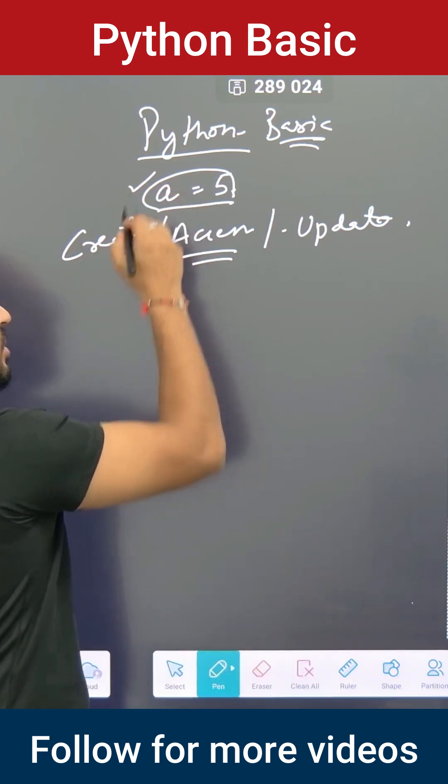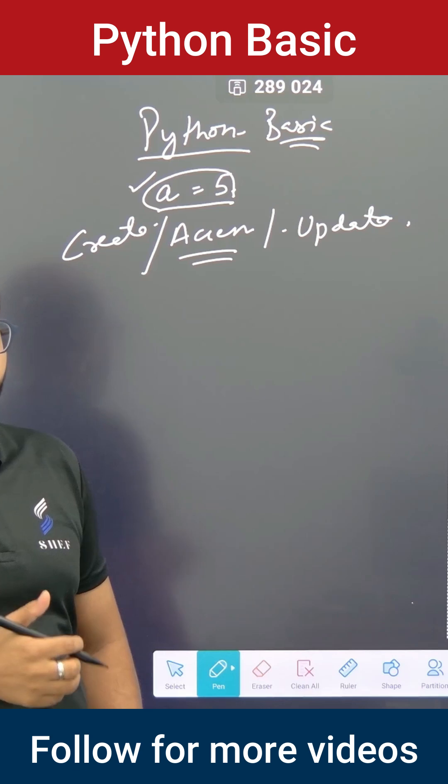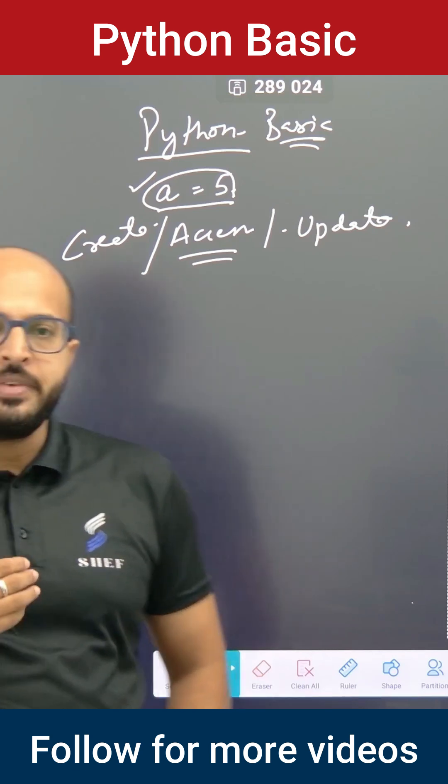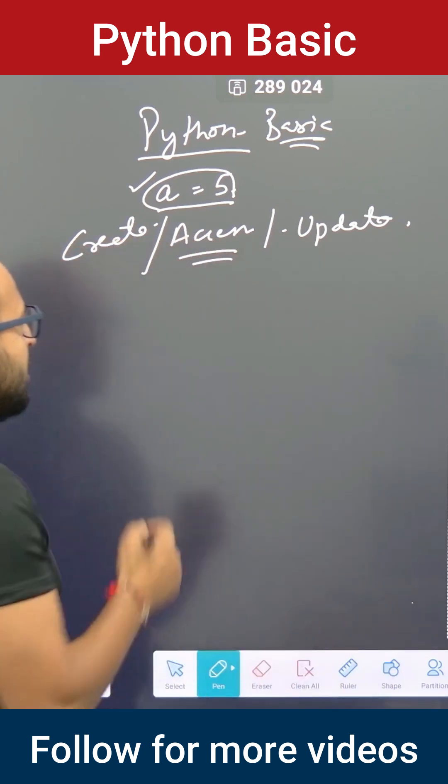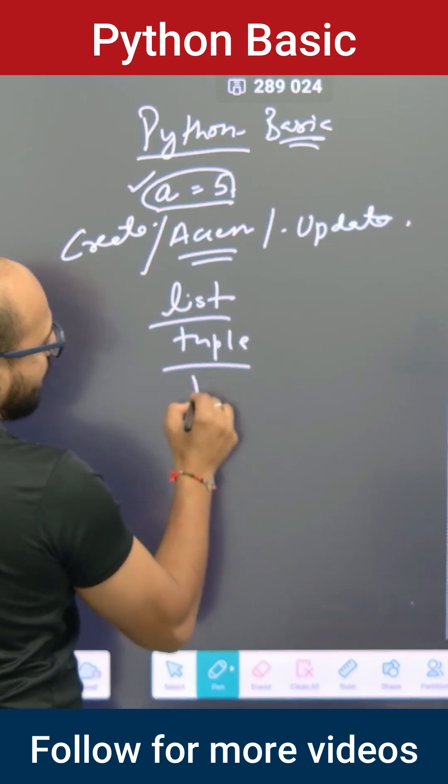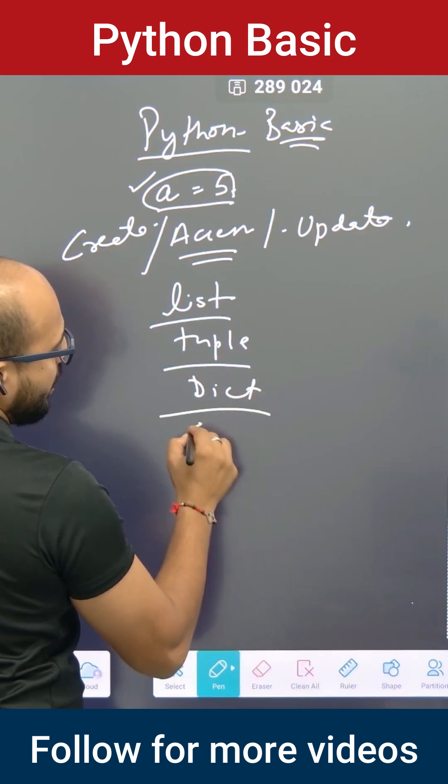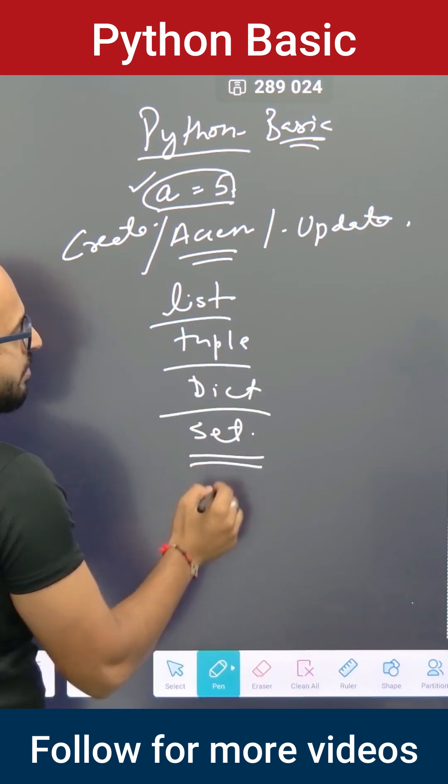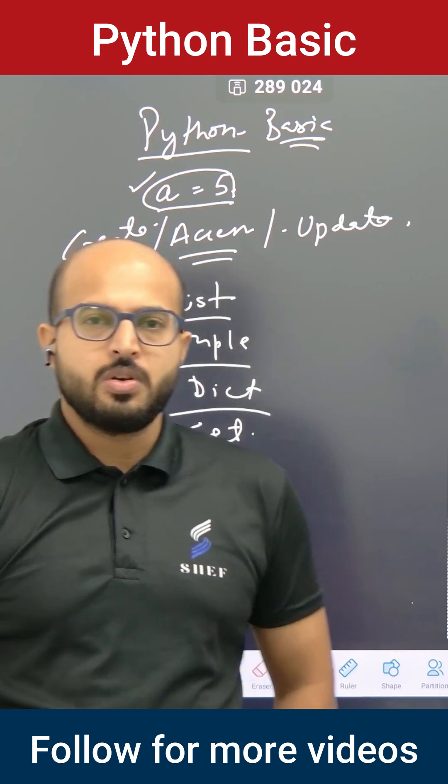So it's not just about the single variable a equals five. Now you have Python data structures: list, tuple, dictionary, and set. All these are your basic data structures for data science that we're going to explore.